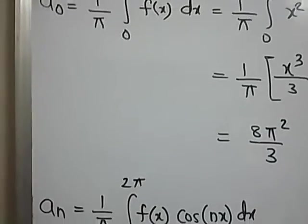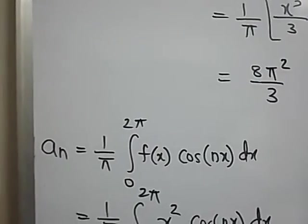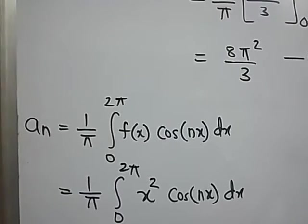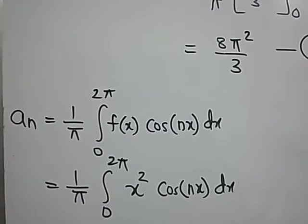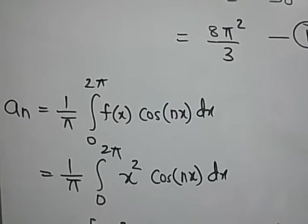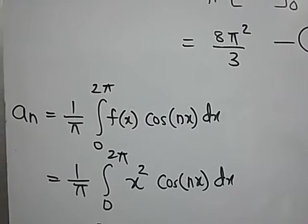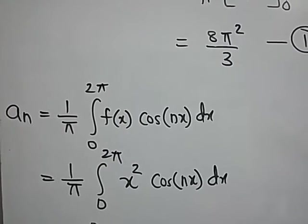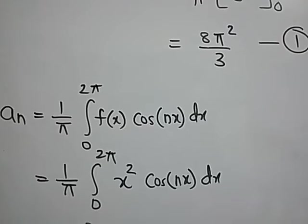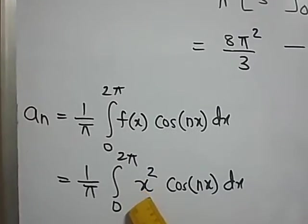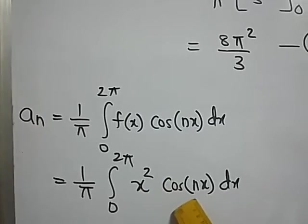Next is aₙ. aₙ is 1 by π integral 0 to 2π f(x) into cos(nx). Now what is f(x)? x². So x² into cos(nx). Remember the previous video on u into v rule where u is x raised to n and v is any function.